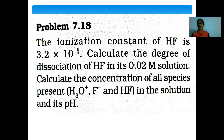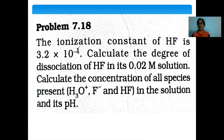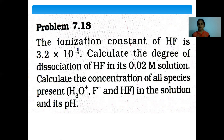There are two reactions taking place. First: HF + H₂O ⇌ H₃O⁺ + F⁻, with Ka = 3.2 × 10⁻⁴. Second: H₂O + H₂O ⇌ H₃O⁺ + OH⁻, with Kw = 1 × 10⁻¹⁴. Since Ka is greater than Kw, the principal reaction is the first one: HF + H₂O ⇌ H₃O⁺ + F⁻, and we proceed with this equation.